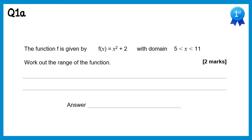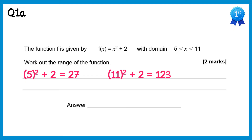For this first question I'm just going to substitute in the endpoints of my domain. Starting with 5: 5 squared plus 2 is 25 plus 2, which is 27. Then with 11: 11 squared plus 2 is 121 plus 2, which is 123. So the range of this function f(x) is between 27 and 123.